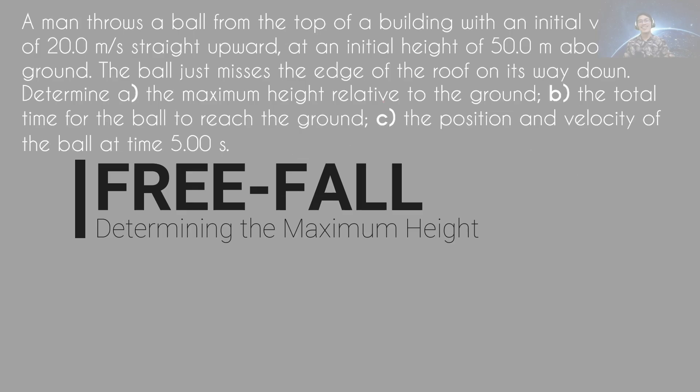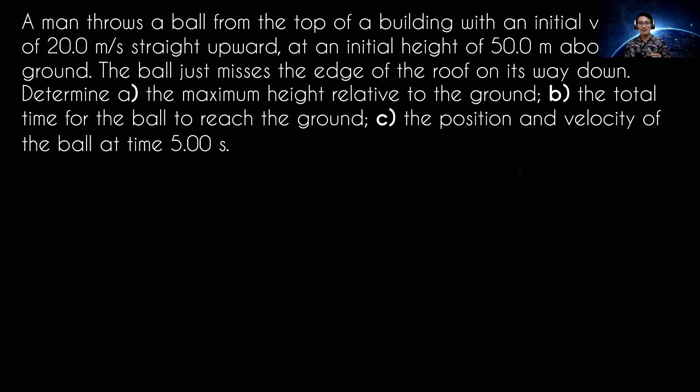Let's have another example. A man throws a ball from the top of a building with an initial velocity of 20.0 meters per second straight upward at an initial height of 50 meters above the ground. The ball just misses the edge of the roof on its way down. Determine the maximum height relative to the ground, the total time for the ball to reach the ground, and the position and velocity of the ball at time 5.00 seconds.